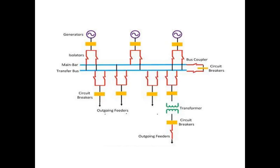In this alternative double bus system, every feeder is directly connected to a second bus called the transfer bus. Advantages include low initial and maintenance cost, and any breaker can be taken out for service while continuity of power supply is maintained by bypassing through the bus coupler. Disadvantages include that an extra breaker is required for the bus and isolator switching is somewhat complicated during breaker maintenance.